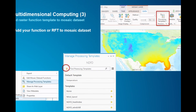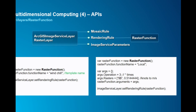Once you have a raster function template, you set it on the mosaic dataset using the context menu to bring up the processing template pane and import the template. In the JavaScript API, it's also straightforward: you create a RasterFunction class, pass the name of the template, and set the layer using the setRenderingRule method. For built-in raster functions, you specify parameters using the arguments method.